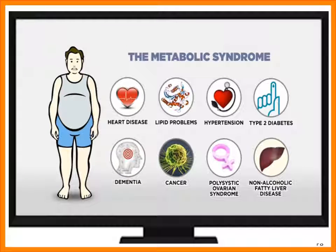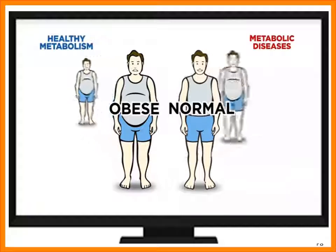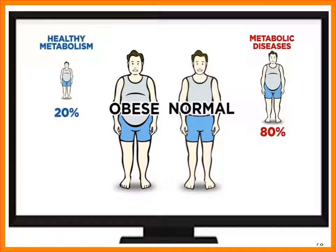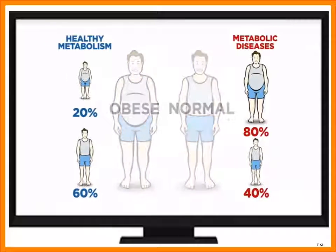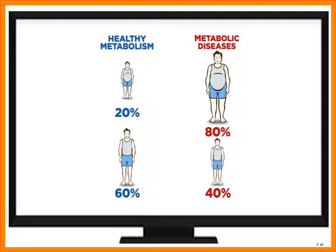Now, here's the key. Everyone thinks that those downstream diseases are because of the obesity, and that could not be further from the truth. The obesity travels with those diseases, but the obesity is a marker for those diseases. Twenty percent of obese people have a completely normal cellular metabolism and they will live to a normal age. Forty percent of thin people — normal weight people — have those same chronic metabolic diseases and will die of them. Nobody dies of the obesity per se. They die of the diseases that come from the metabolic dysfunction.